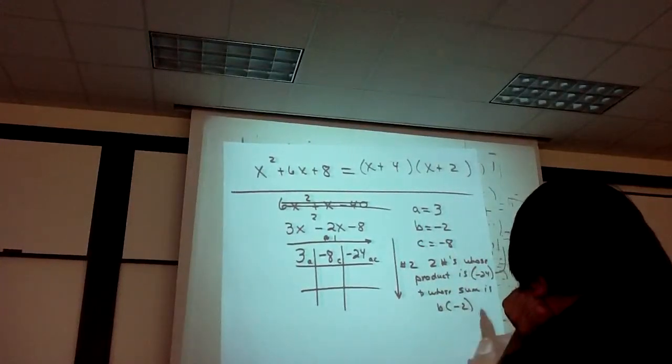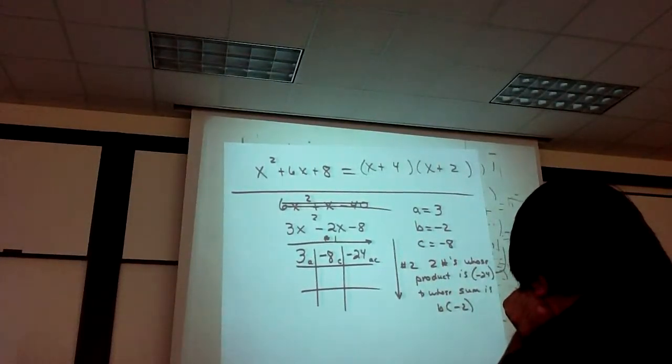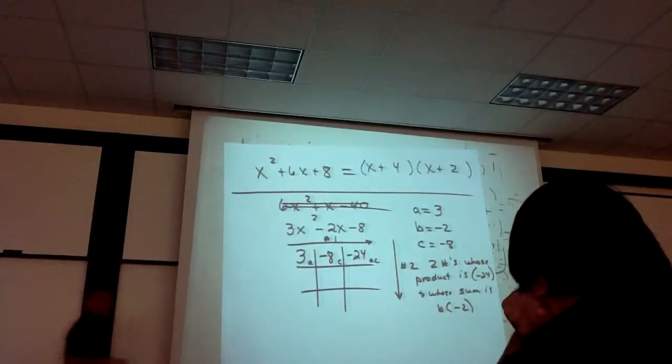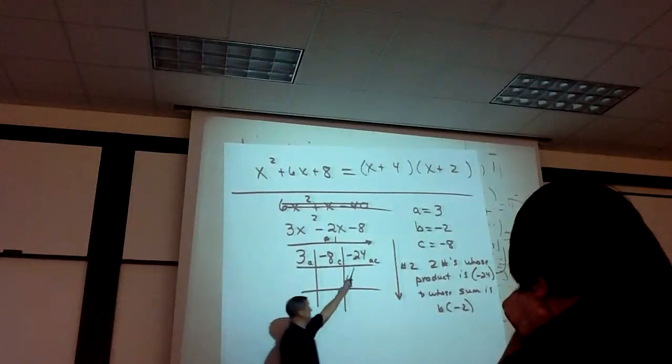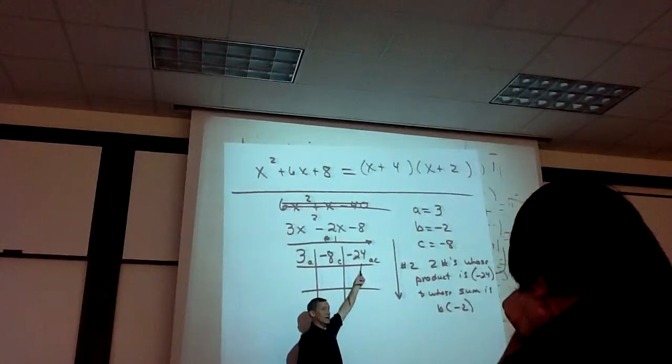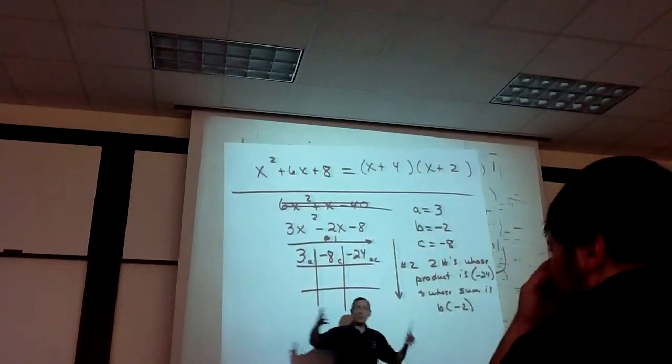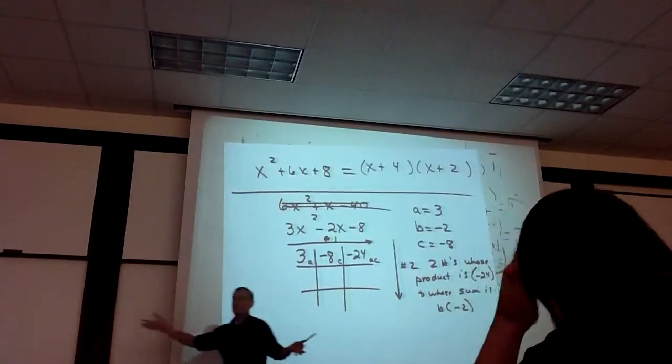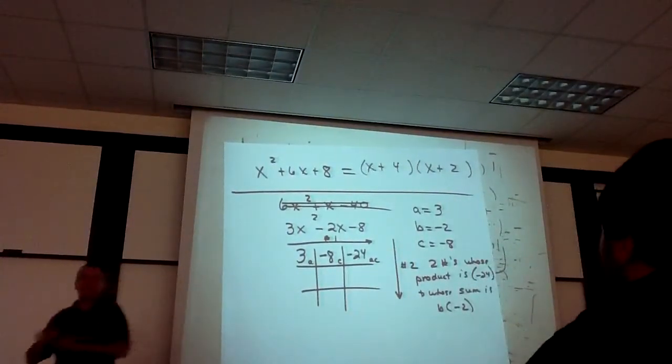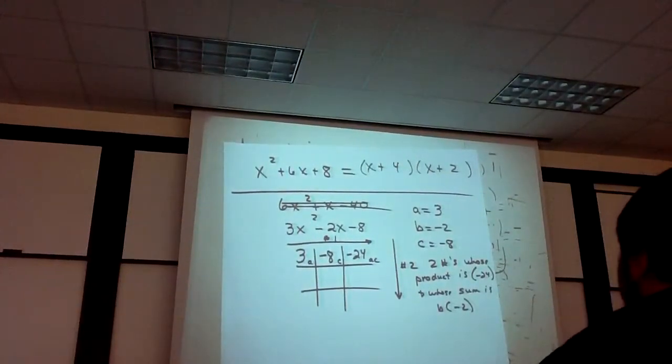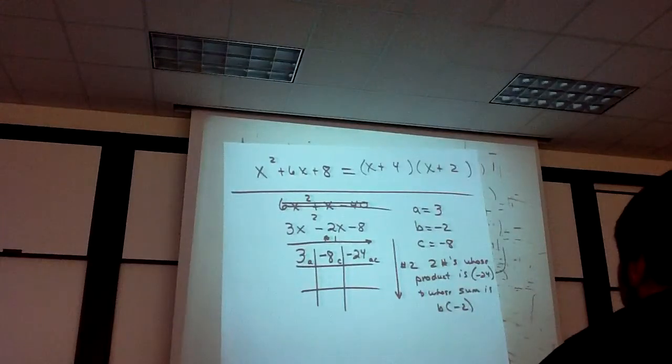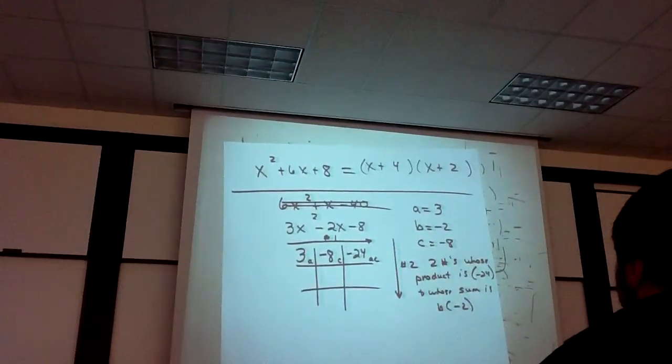So I'm looking for two numbers that multiply to get negative 24 and they add to get whatever b is. In this case, negative 2. Can you think of two numbers like that? What are they? Negative 6 and positive 4. That's it.